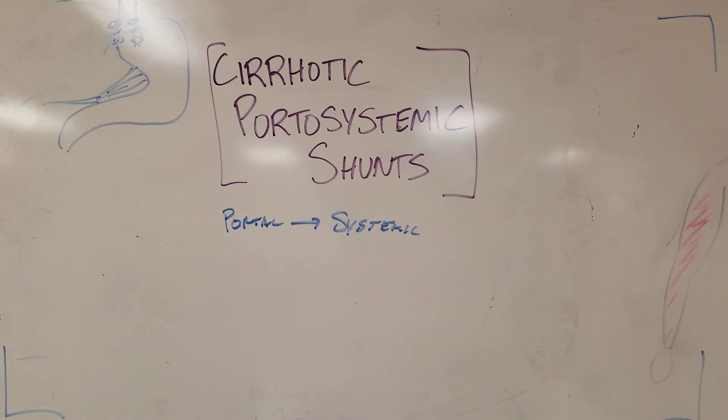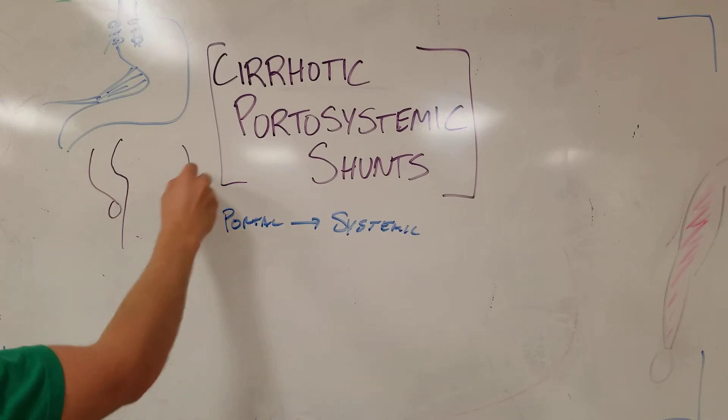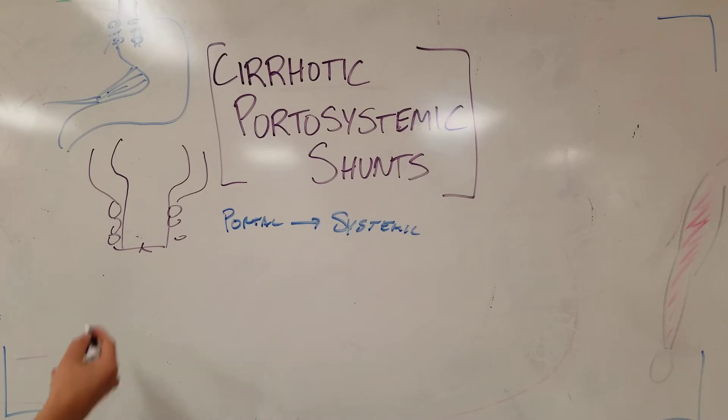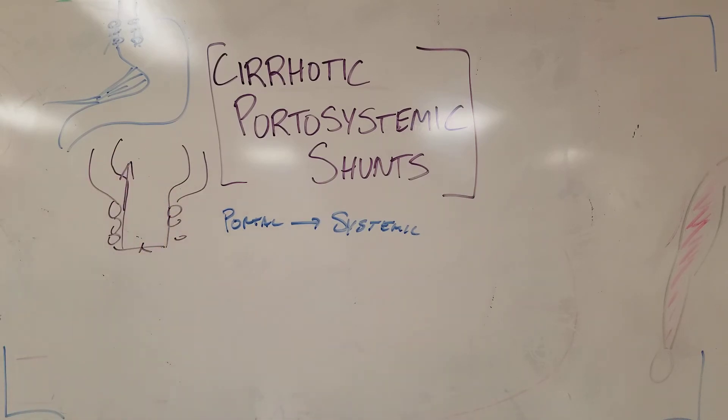The second one is the anal rectal shunt. If you look at your rectum coming down to your anus, at the anal verge, rather than blood going back up into your portal system, it's going to come out externally towards the patient's anus, causing anal hemorrhoids, almost like varices of the patient's anus.